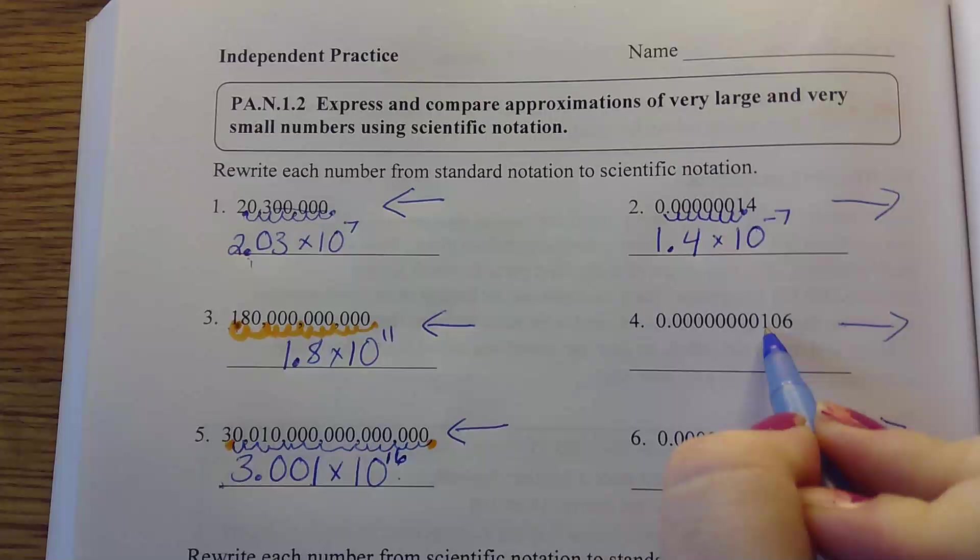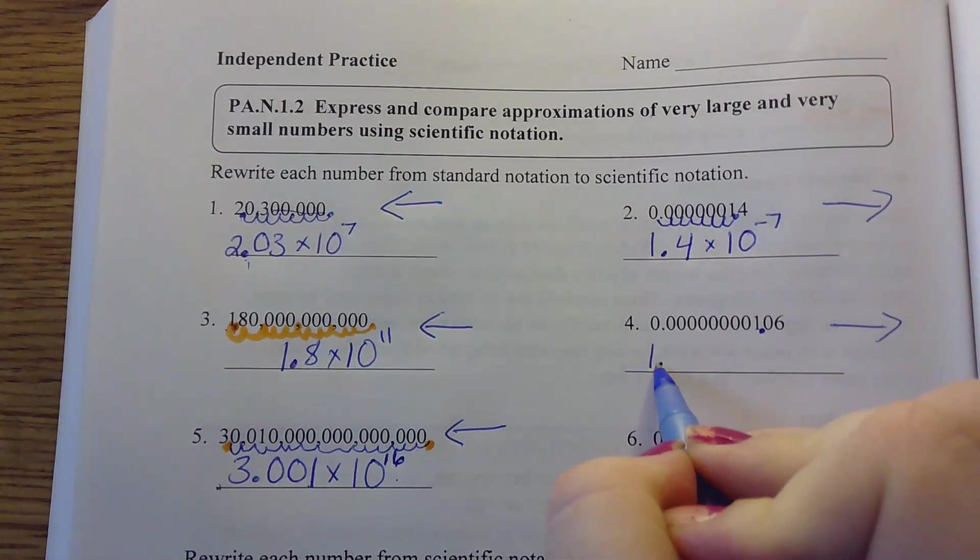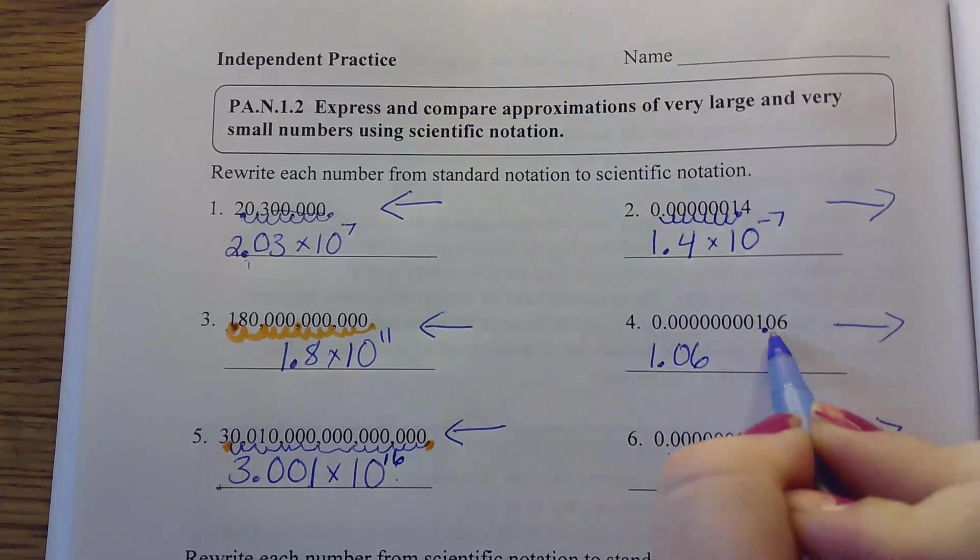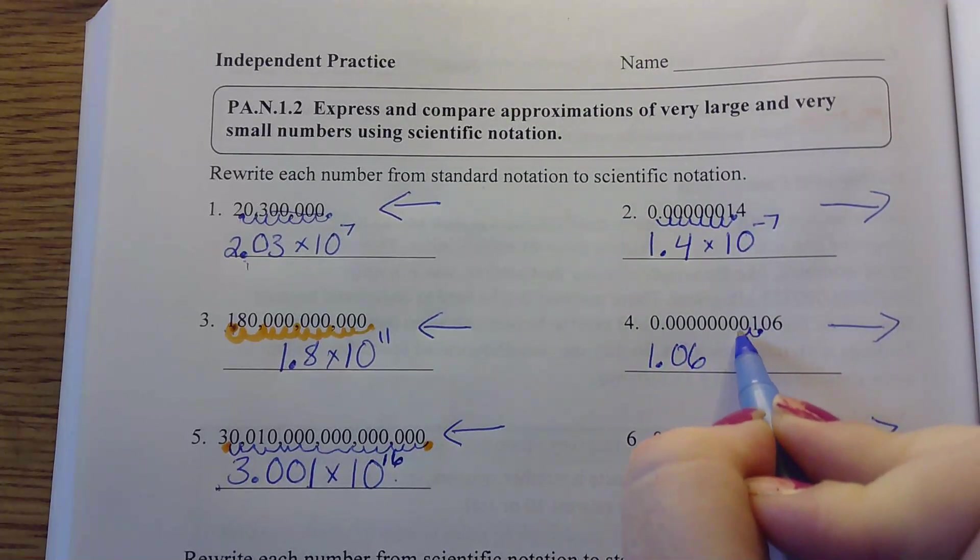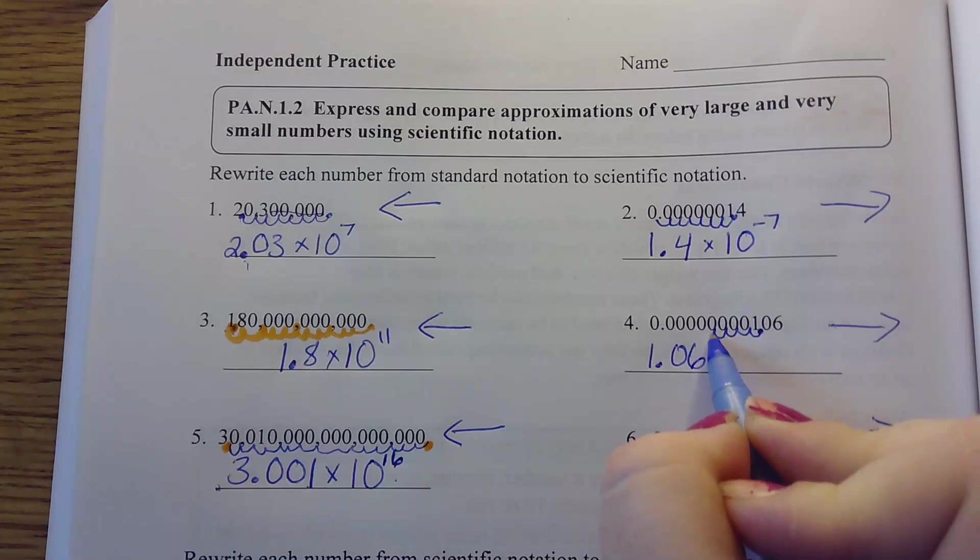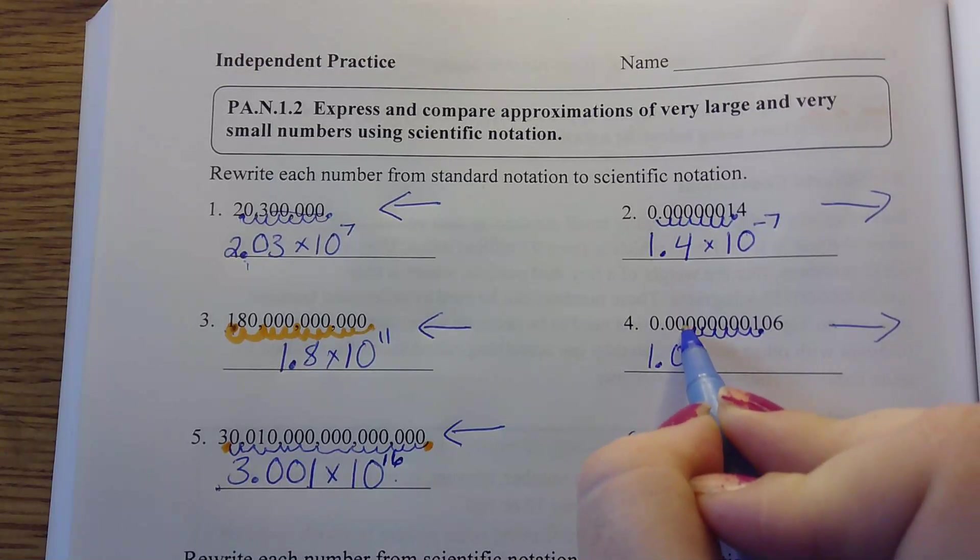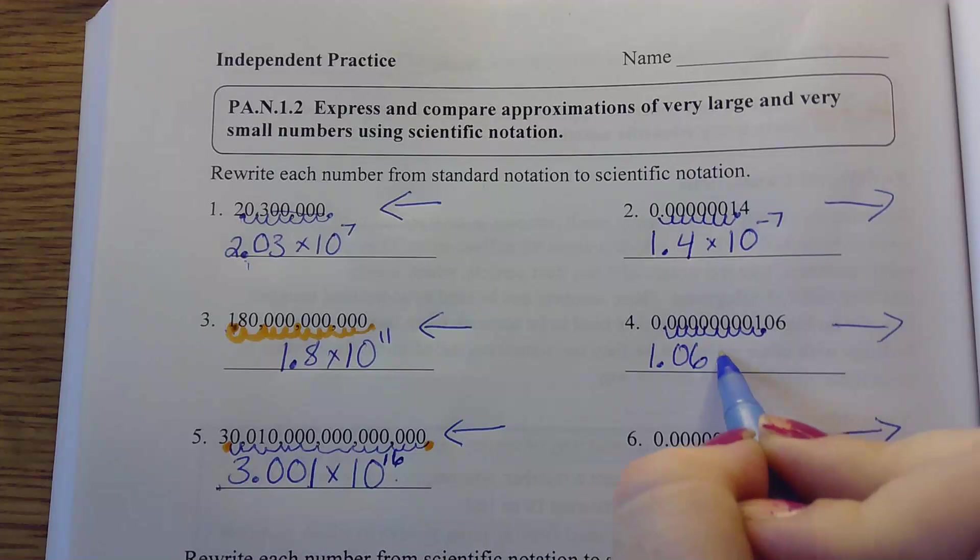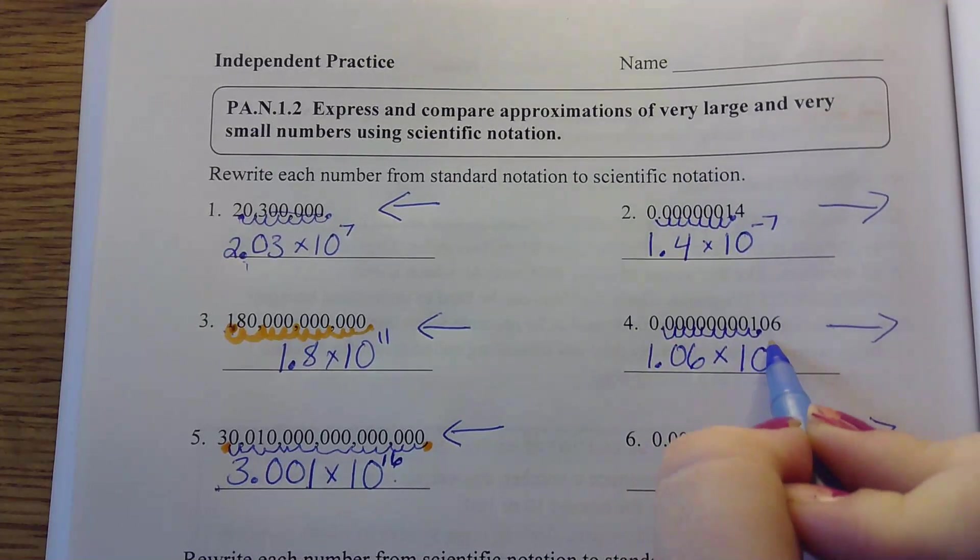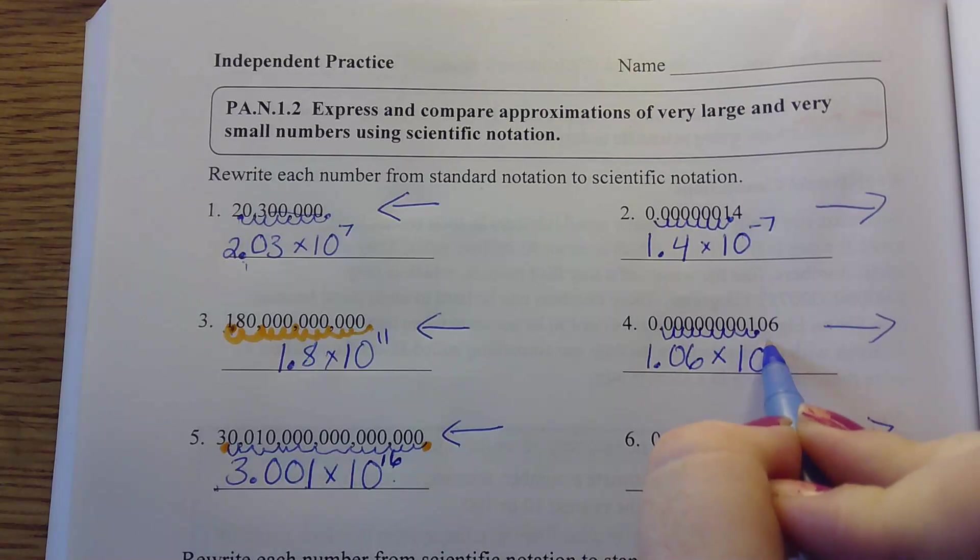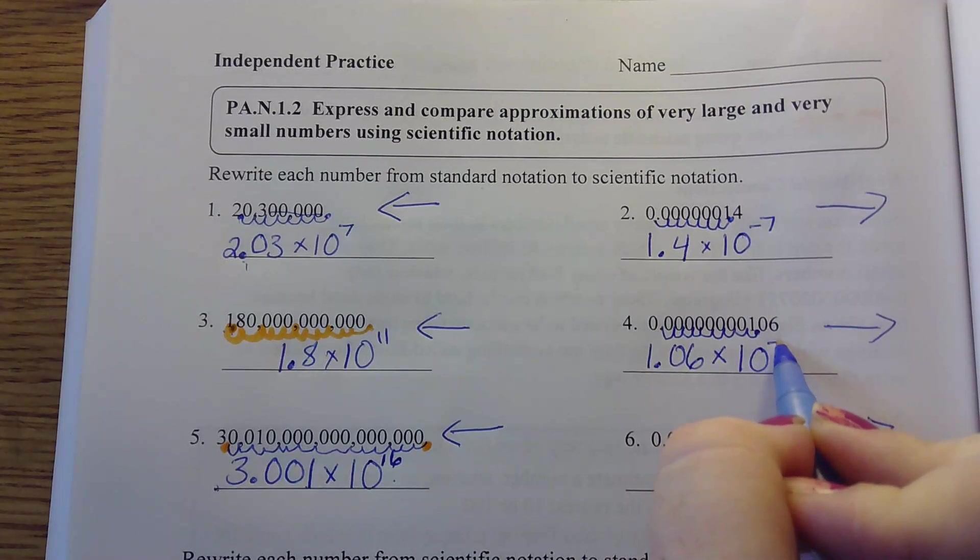Number 4, we've got to get it to right here, so that we can have 1.06 as our number. So 1.06 times 10 to the negative 9.